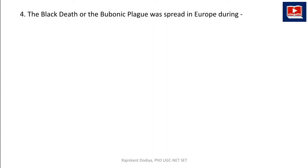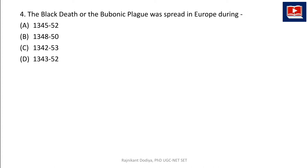The next question: the Black Death or Bubonic Plague was spread in Europe during — options: 1345–52, 1348–50, 1342–53, or 1343–52. The correct answer is B: it was spread in Europe during 1348 to 1350. This plague is also called the Black Death.